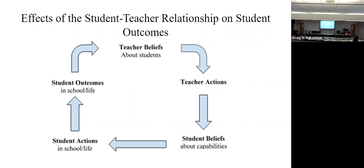So the effects of a student-teacher relationship on student outcomes — let's view this model from a positive lens. If a teacher has very positive beliefs about students, like 'you can do it,' the teacher's actions are going to reflect that. Then the student is going to be like, 'teacher believes in me, I think I believe in me too.' The student starts to have their own belief about their abilities, which spills over into the student's actions. Now I'm going to show that I can do whatever. And the student is going to have a more positive outcome all throughout school and life, and the cycle just repeats itself.